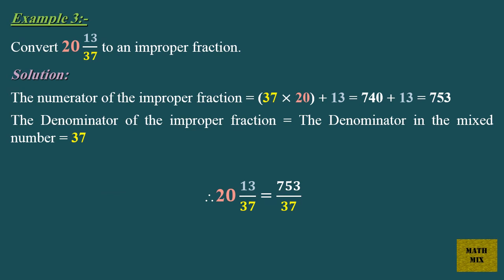Example 3: Convert 20 and 13 thirty-sevenths to an improper fraction. Solution: The numerator of the improper fraction equals 37 times 20, plus 13, which equals 740 plus 13, which equals 753. The denominator of the improper fraction equals the denominator in the mixed number, which equals 37. Therefore, 20 and 13 thirty-sevenths equals 753 over 37.